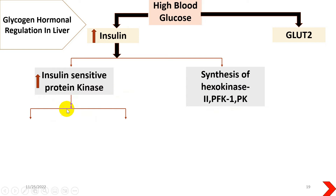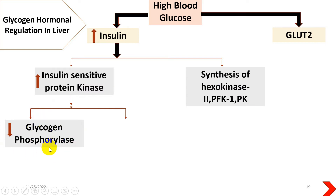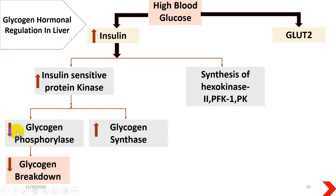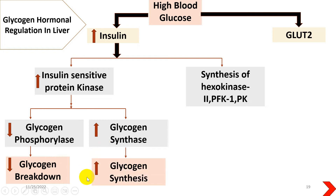Increased insulin-sensitive protein kinase, through a cascade mechanism, will activate glycogen synthase and downregulate glycogen phosphorylase — inhibiting glycogen phosphorylase activity while enhancing glycogen synthase activity. When glycogen phosphorylase is downregulated, this results in decreased breakdown of glycogen — in other words, inhibition of glycogenolysis — while glycogen synthase enhances glycogen synthesis, increasing glycogenesis.